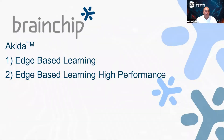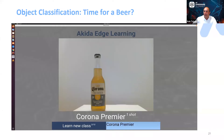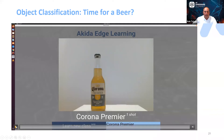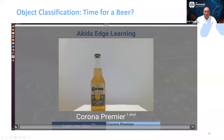Let's do another demo — this one is really cool. This is edge-based learning; we're going to do some image classification, learning of devices or images, and then do recognition in a very high-performance environment. One of my favorite demos we've done is this beer bottle demo. These images are not in a network or dataset — they are different, and we're adding them in as we go.